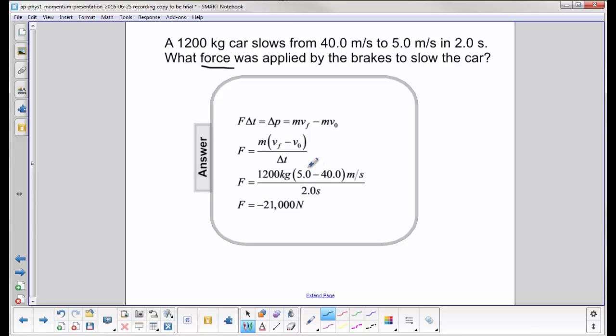Your final velocity is 5, your initial is 40, so you're going to get a negative number here. Then we divide through by the time, we get negative 21,000 newtons.